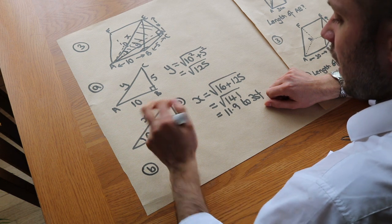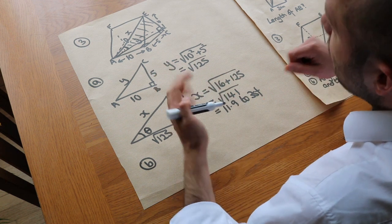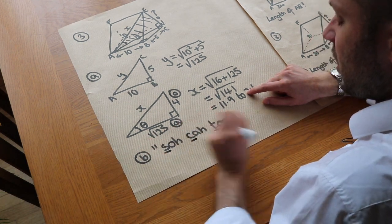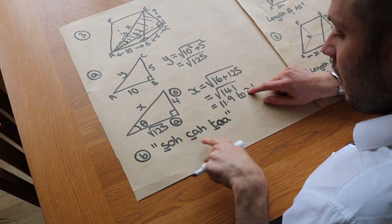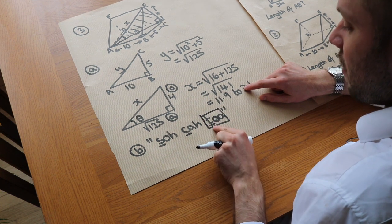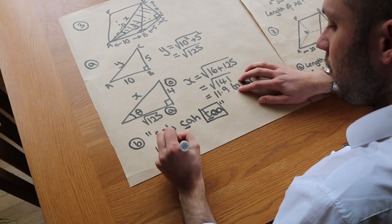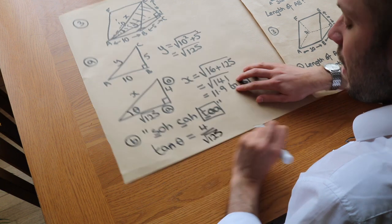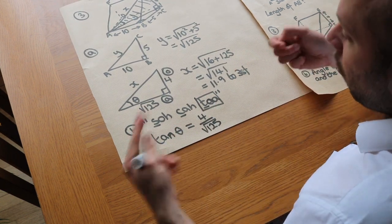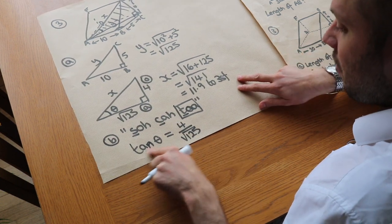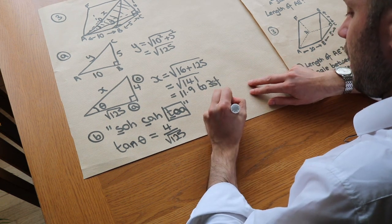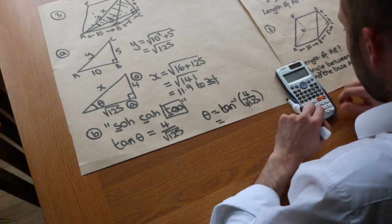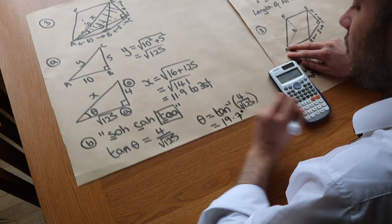Using SOHCAHTOA to find this angle, we label the sides: the side of length 4 is opposite the angle (O), and the side of length √125 is adjacent (A). Since we're using O and A, we use tan. So tan(θ) = opposite/adjacent = 4/√125. To solve for θ, we take inverse tan of both sides: θ = tan⁻¹(4/√125) = 19.7 degrees. That is the final answer.